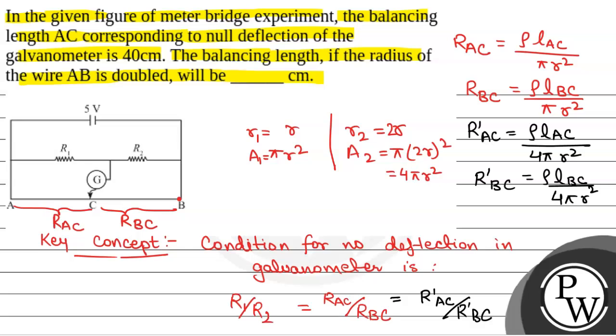doubled, then the balancing length will not change and it will be the same, which is 40 cm. So the correct answer will be 40 cm. Hope you all understood it well. Best of luck.